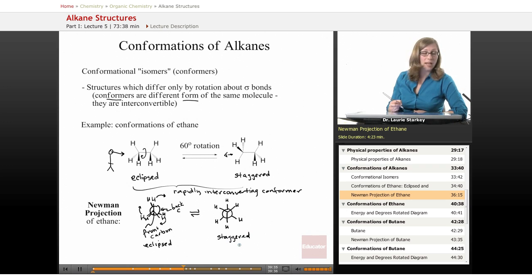Now are these conformations equal in energy? They're not. The eclipsed conformation is higher in energy. It is less stable because of the interactions between the electrons in the CH bond in the front and the CH bonds in the back being perfectly aligned.